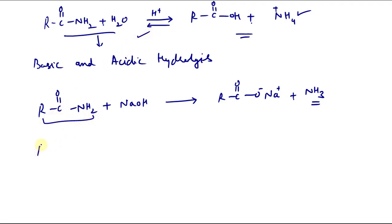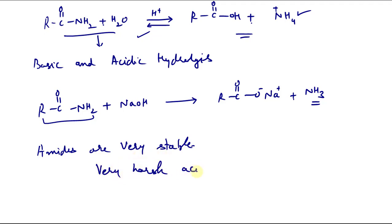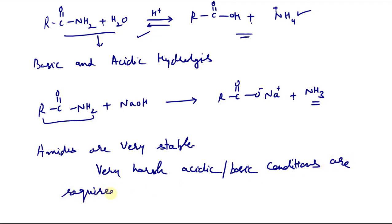Amides are the most stable carboxylic acid derivatives; amides are very stable. So we need very harsh conditions — very harsh acidic or basic conditions are required for hydrolysis. Usually in acidic conditions we require around 6 molar acid, or we can use sulfuric acid. Under basic conditions, you can use 40% NaOH. So these conditions are quite harsh.